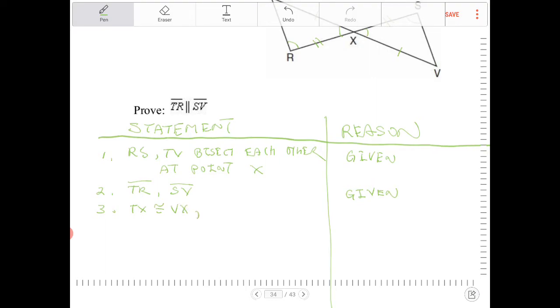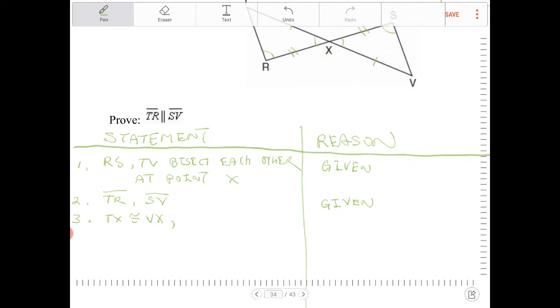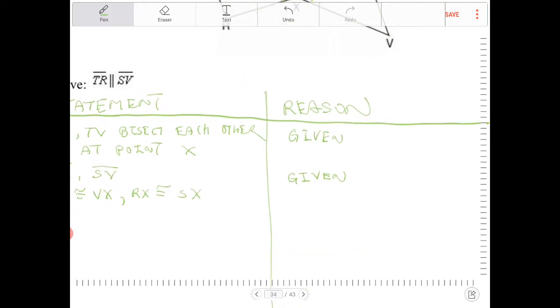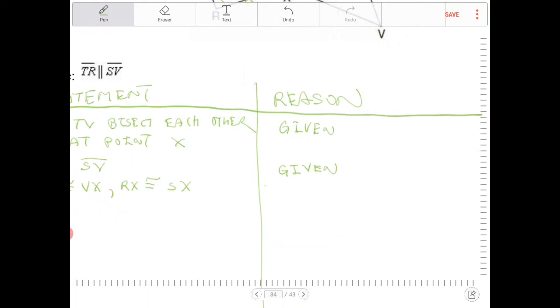And why don't I state the other congruent segments as well? Well, RX is congruent to SX. And that's because TV and RS,